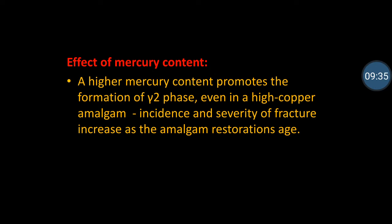The next factor is mercury content. Greater mercury promotes formation of the gamma 2 phase, which is the weakest phase and contains more tin. Even high-copper amalgam, which eliminates the gamma 2 phase, over a period of time as the restoration ages may show fracture. This is how mercury content influences the strength of amalgam.